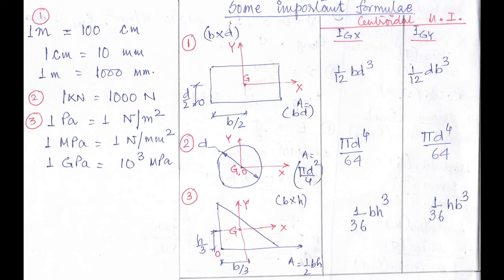The last one is a right-angle triangle of base b and height h. The centroid is located at b/3 and h/3 from the 90-degree corner — that is, one-third of its base and one-third of its height from the right angle. The area of a triangle is (1/2) × base × height. The centroidal moment of inertia about the x-axis is (1/36)bh³, and about the y-axis is (1/36)hb³.